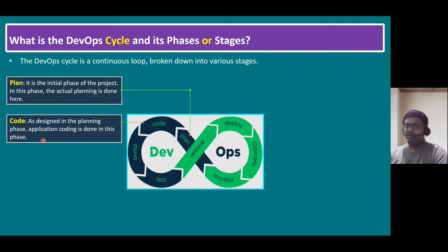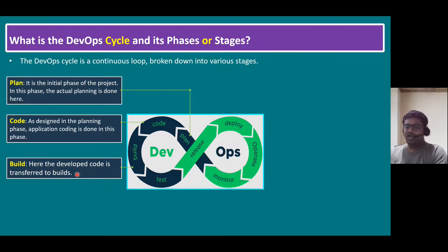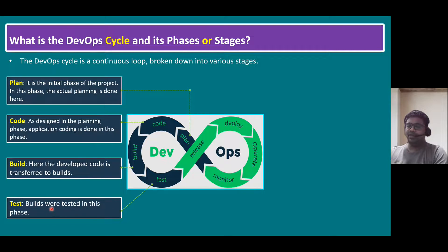The third stage is Build — the developed code is transferred to build, where the environment is provisioned. For example, the development cluster (one or two worker nodes) or production cluster (three master nodes, three worker nodes) gets provisioned at the build level. Once build is completed, we move to the Test stage, where we verify whether everything was provisioned successfully or not.